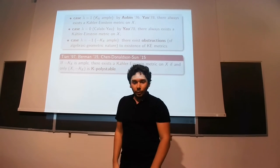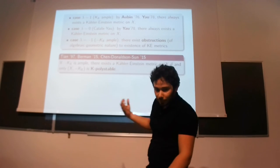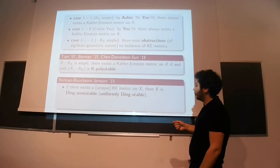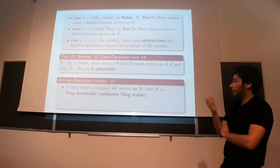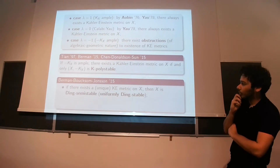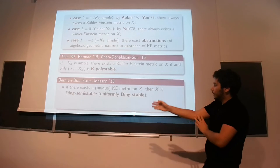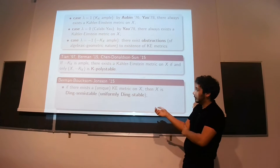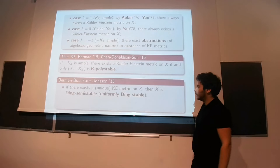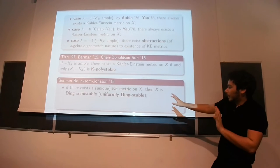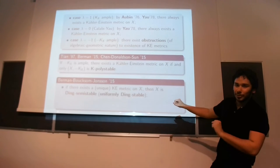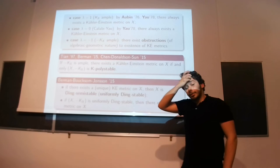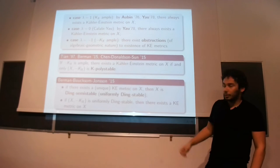And so in the title of my talk, I mentioned Ding-stability. So Ding-stability is a similarly defined thing. And there is a version of YCD in this case as well. So in work of Berman and Janssen, they show that if there exists a Kähler metric on X, then X is Ding-semistable. And if moreover this is unique, then we're uniformly Ding-stable. And conversely, if X is uniformly Ding-stable, then there exists a Kähler metric on X.